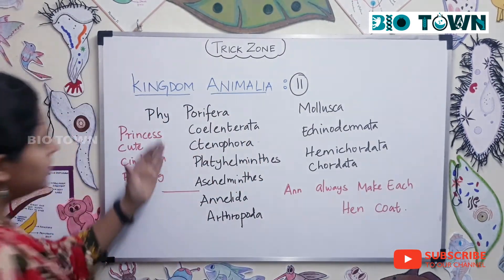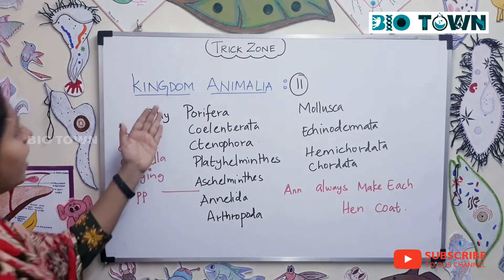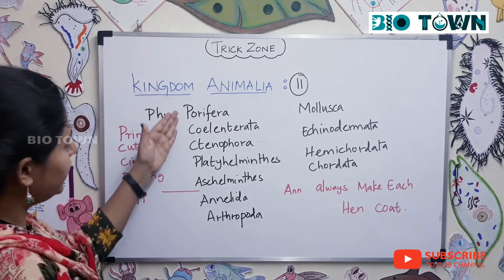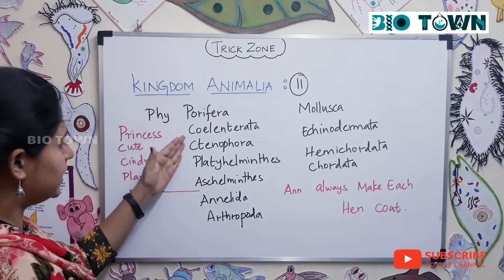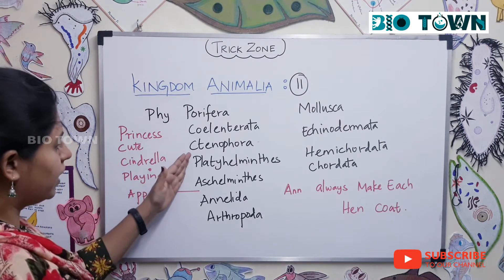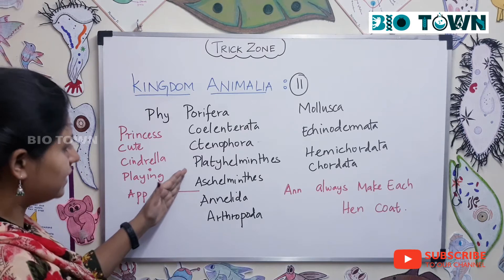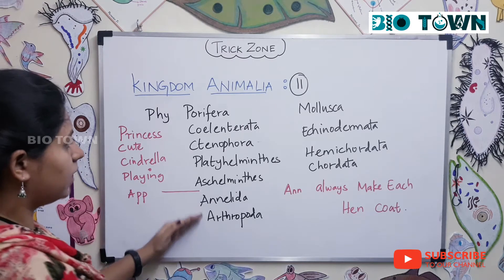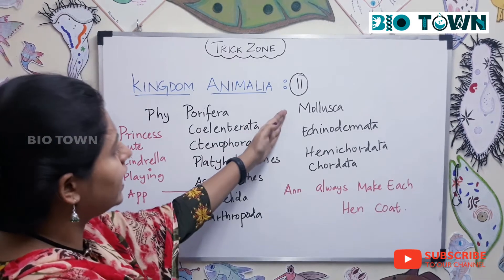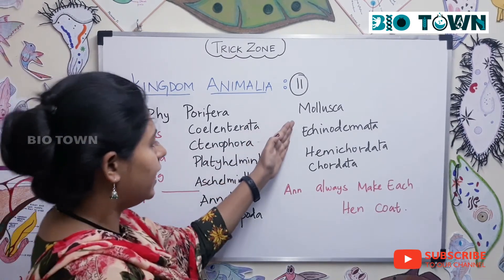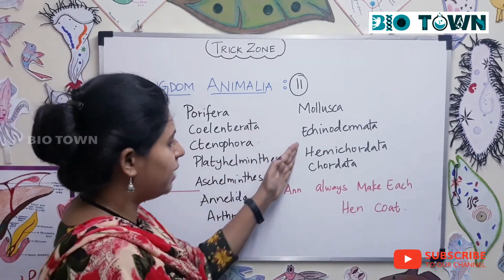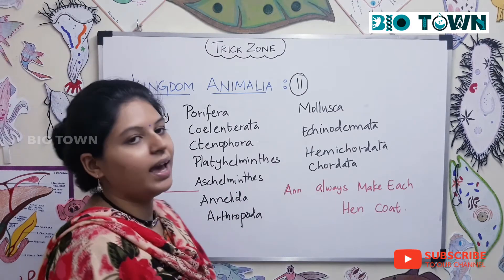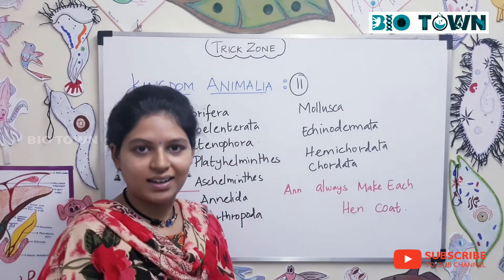So you have all these eleven phyla: Porifera, Cnidaria, Ctenophora, Platyhelminthes, Aschelminthes, Annelida, Arthropoda, Mollusca, Echinodermata, Hemichordata, and Chordata.